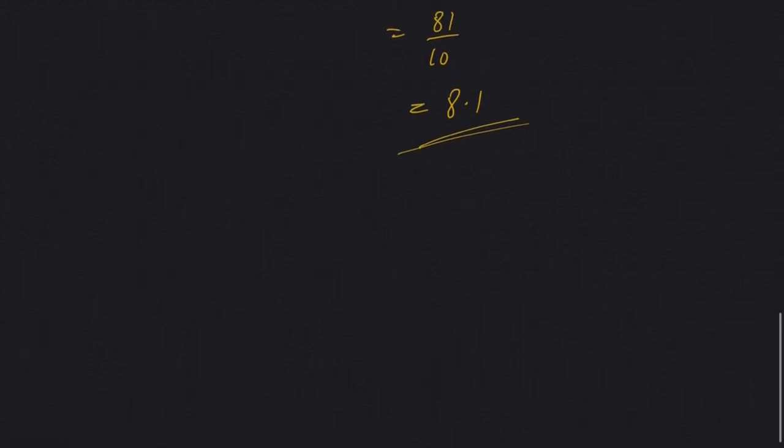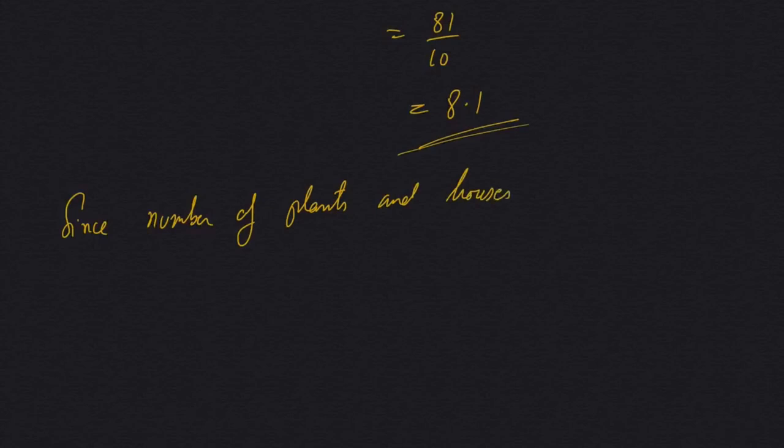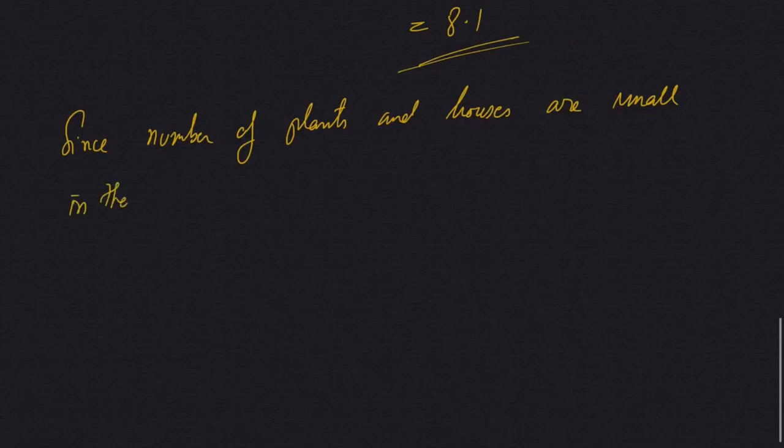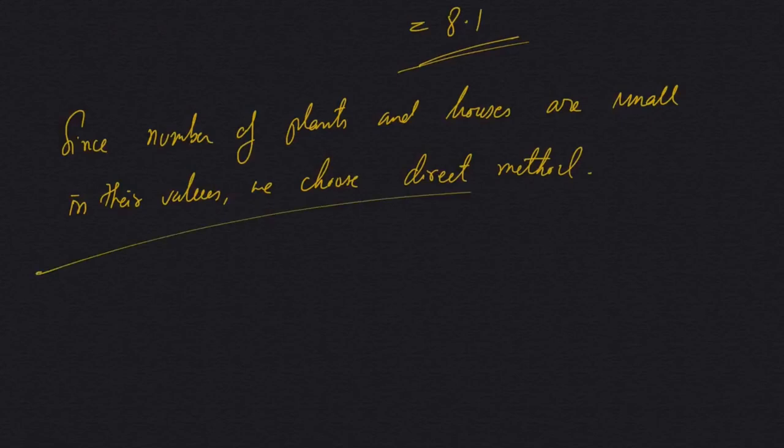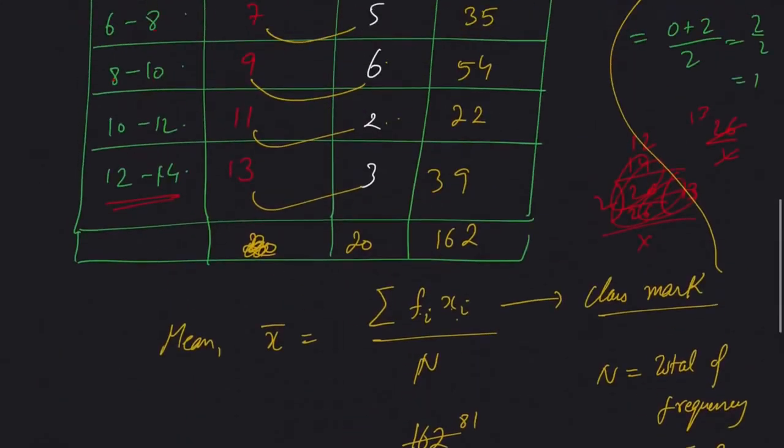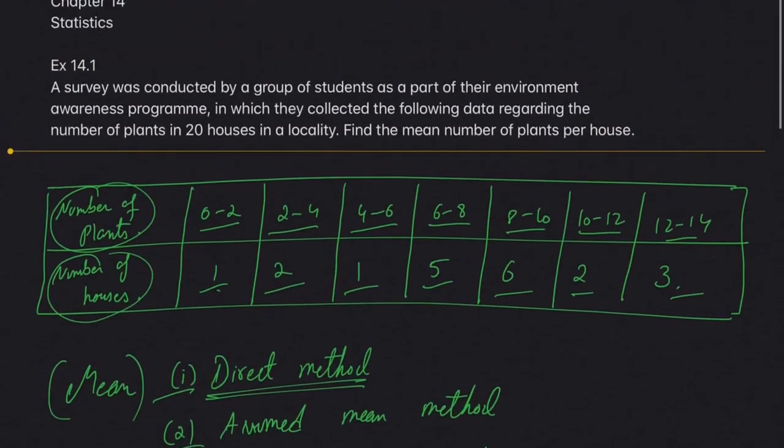So if you want to write down the answer, we can also write: Since the number of plants and houses are small in this question and their values are small, we choose the direct method. That will be the conclusion for this first question.